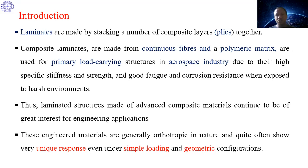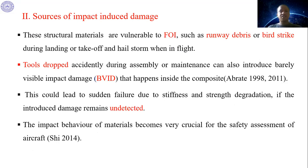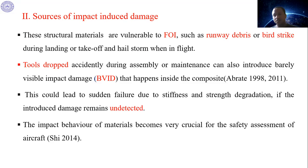These engineered materials are usually orthotropic in nature and quite often show very unique responses under loading conditions and different geometric situations. Different sources of impact loading exist, among them foreign object impact such as runway debris, bird strike, and accidental tool drop at maintenance sites. These impact sources produce mainly visible impact damage inside the composite, which could lead to sudden failure due to stiffness and strength degradation — undetectable by naked eye — making it a serious safety concern for aircraft.